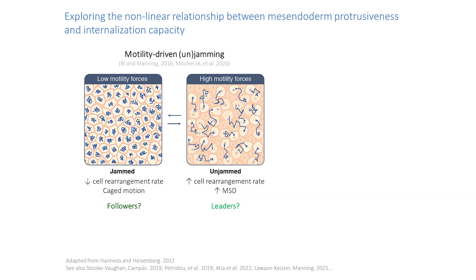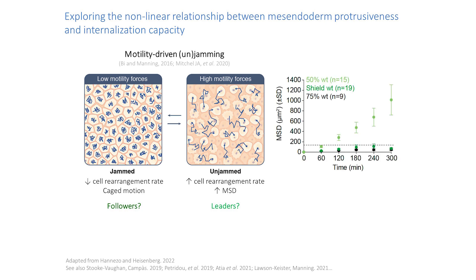The idea is that our leader cells are above the critical value of motility forces — they can drive rearrangements, internalize, and can be said to be unjammed — whereas follower cells are below the threshold, stuck and unable to displace within the tissue. The key parameter to measure to test this is the mean square displacement. We found that the mean square displacement for the early cells is very high, as expected since these cells internalize.